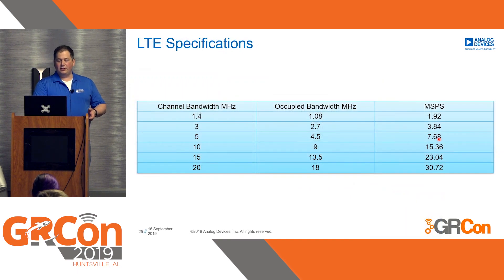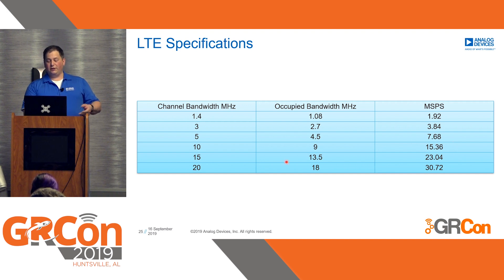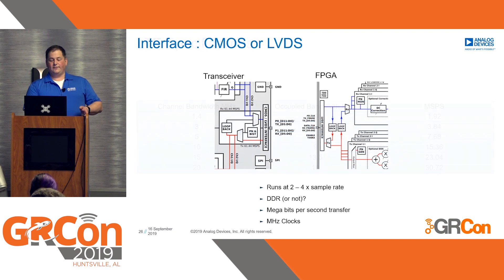Here are the actual numbers for LTE: LTE 10 has a channel occupied bandwidth of 9 MHz but a sample rate of 15.36 mega samples per second — this is for oversampling. That gets us to the interface between the transceiver device and the FPGA.